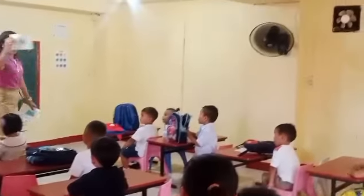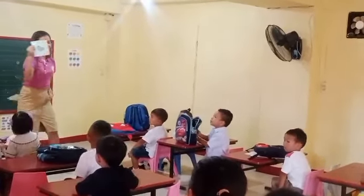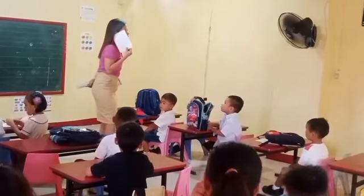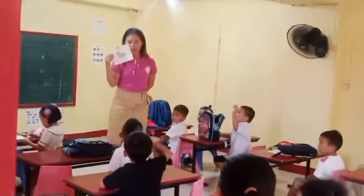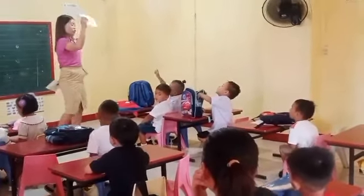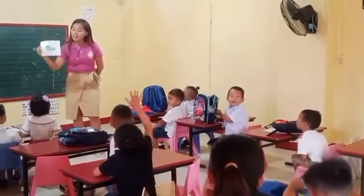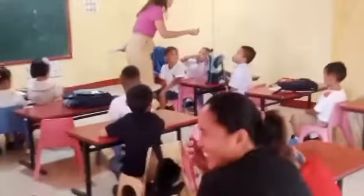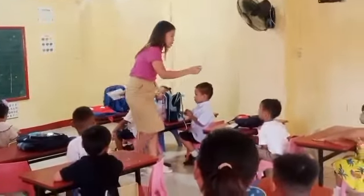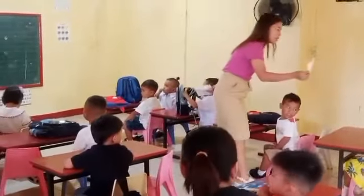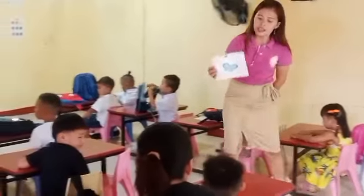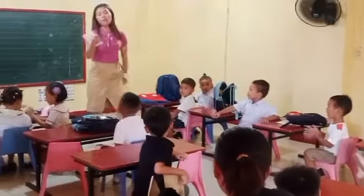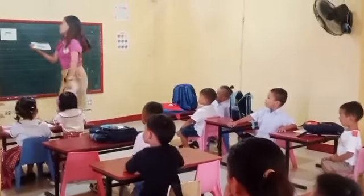Okay, another one. What is this? A butterfly. Yes, this is a butterfly. Very good. This is a butterfly. Say it. Butterfly. What's the color? The butterfly is color blue. Okay, what is the color? Blue. The butterfly is blue. Okay, very good.